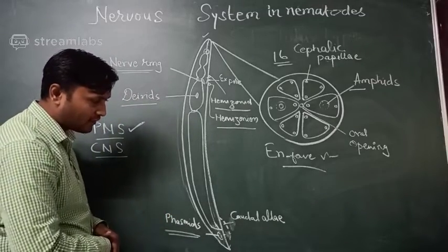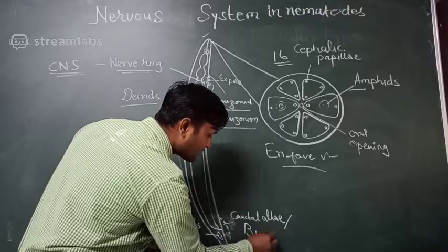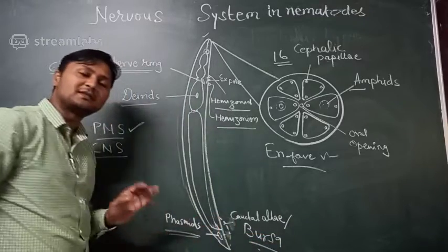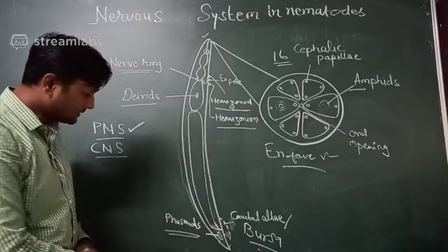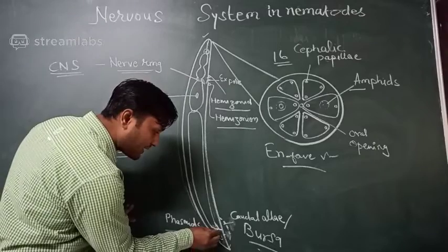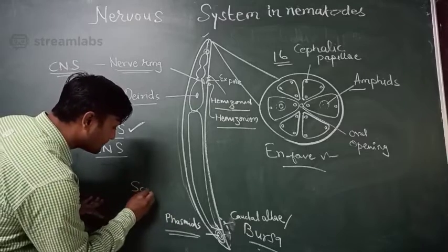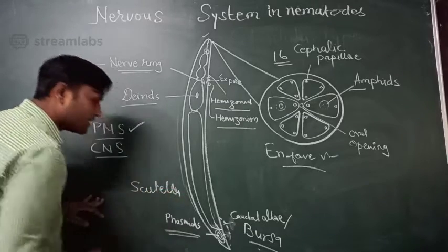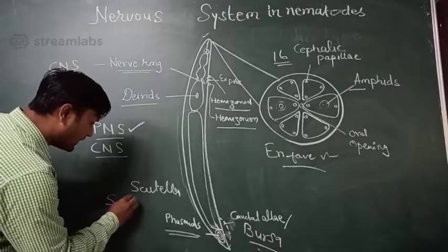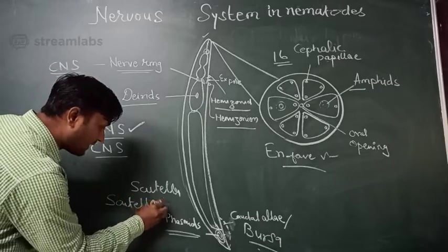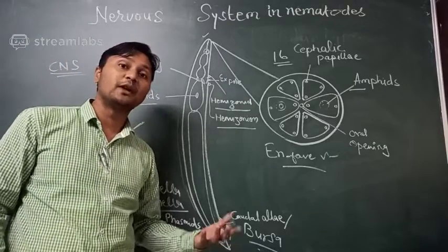Another important organ is the caudal alae, also known as the bursa, which is present only in male nematodes. In some cases, if phasmids are more prominent — if their size is bigger or larger — then they are called stutala, and that nematode is called Stutala nema, a nematode with very large-sized phasmids.